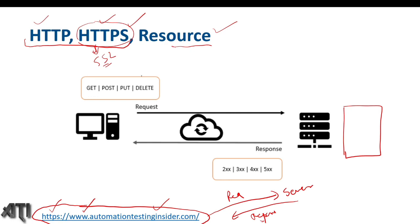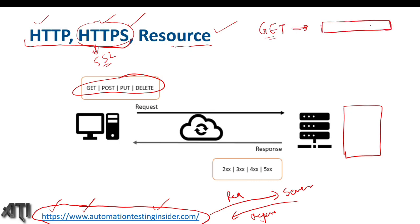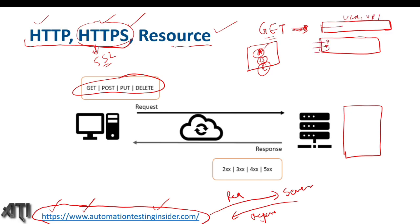Now let's talk about different HTTP methods. We have the GET HTTP method. So what does GET mean? We send a request to the server to get some information from it — for that purpose we use the GET method. For example, suppose we have an application for user registration and users A, B, C are already registered. If we want information about user A, we send a GET request using the base URL, providing the user ID, and we get the response back from the server.